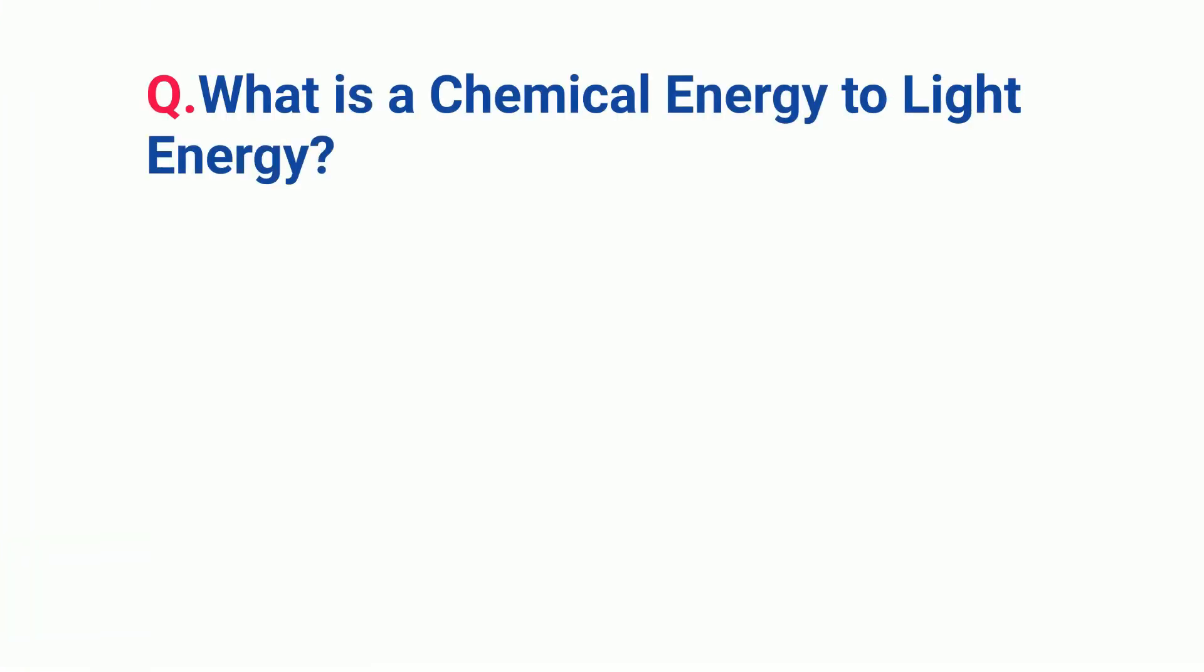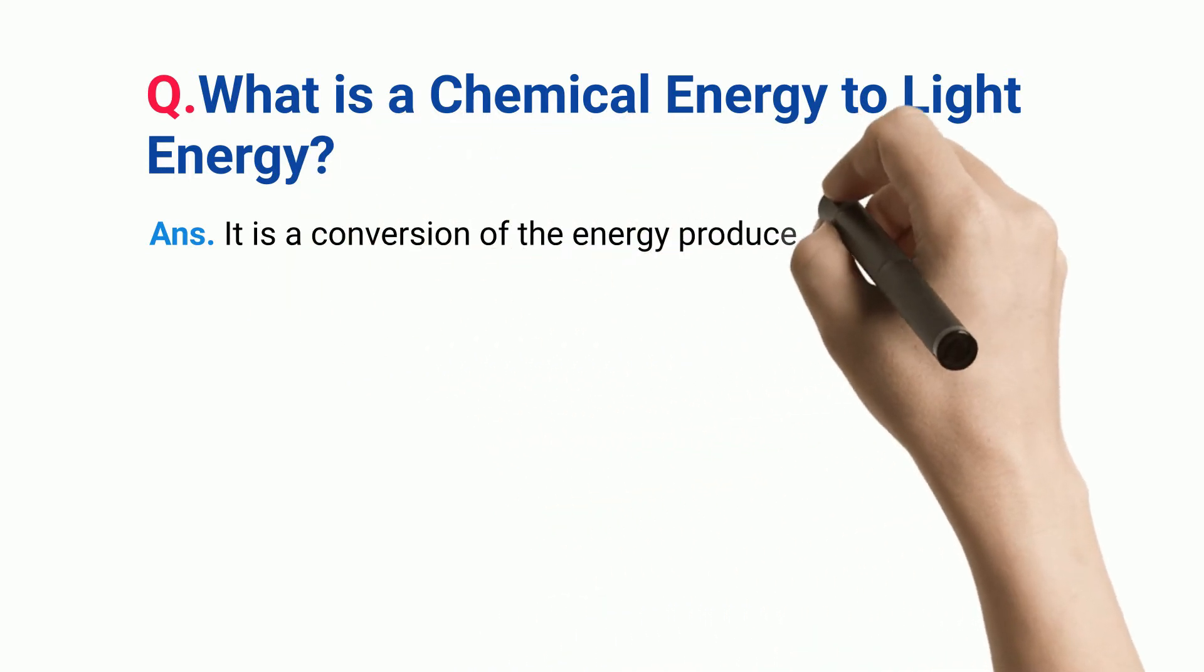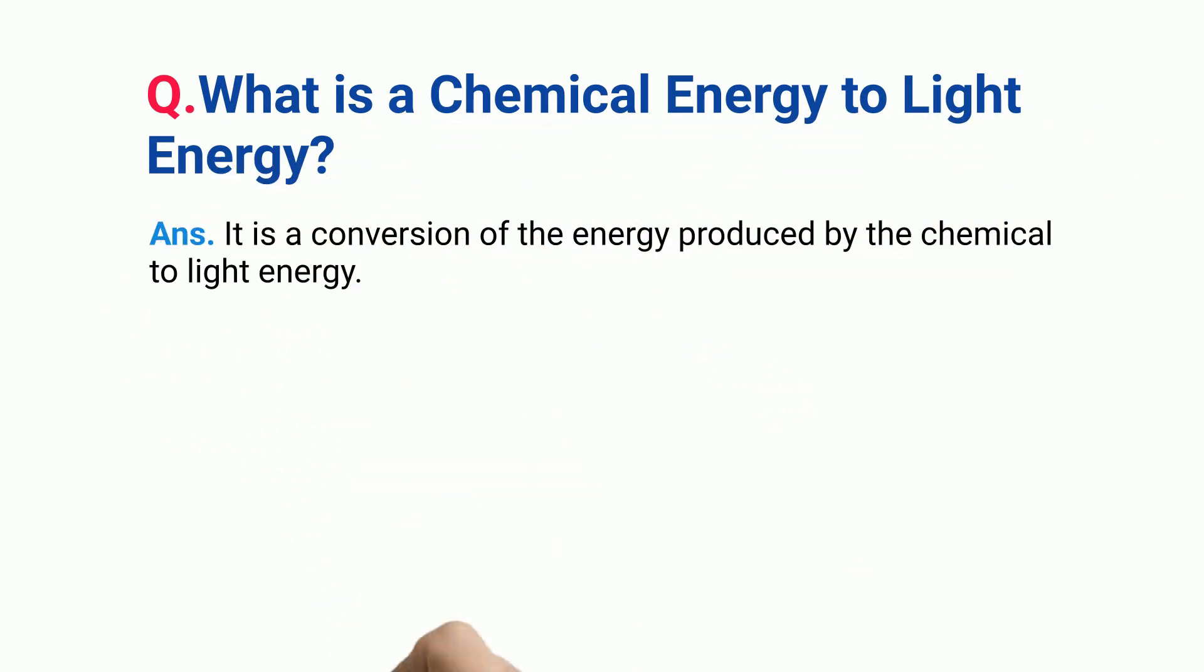What is a chemical energy to light energy? It is a conversion of the energy produced by the chemical to light energy.